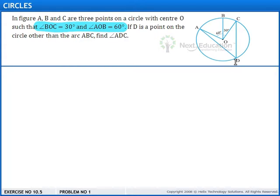If D is a point on the circle other than the arc ABC, find the measure of angle ADC. That is, we have to find this angle.